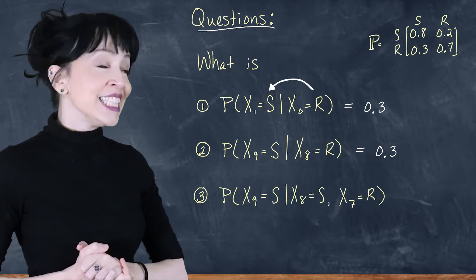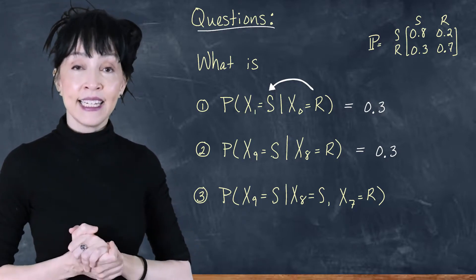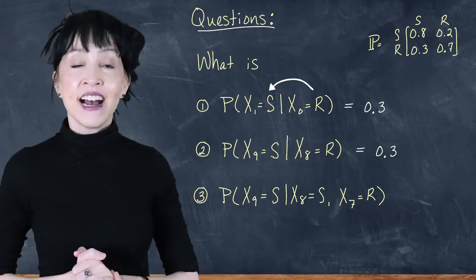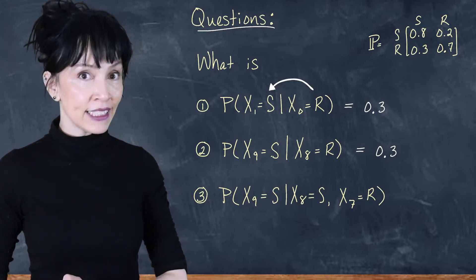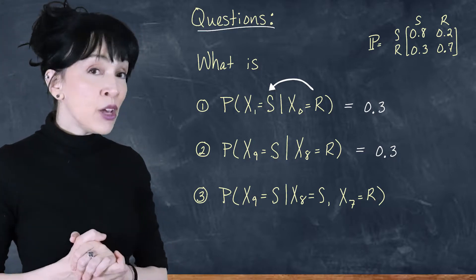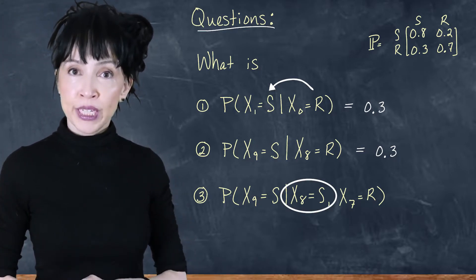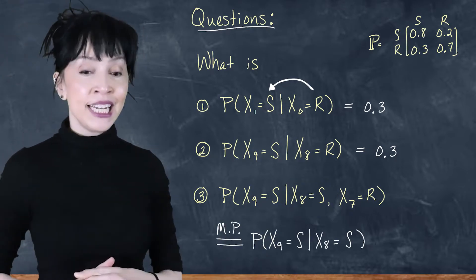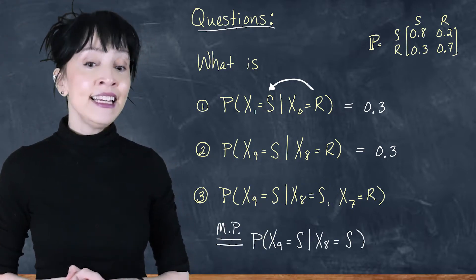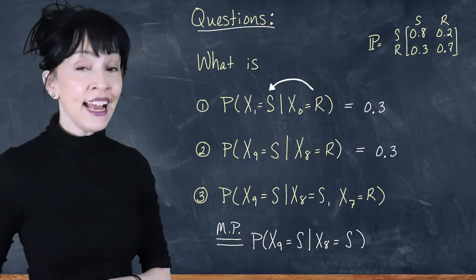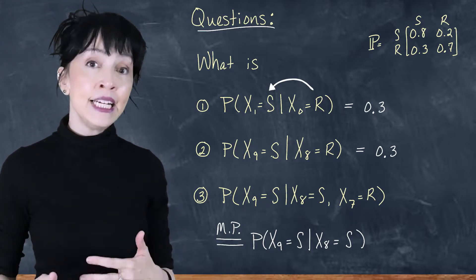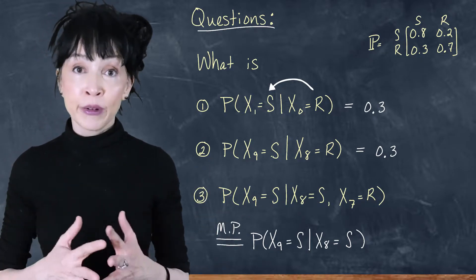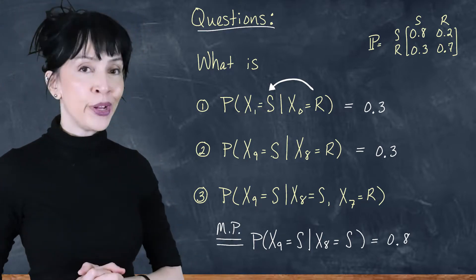Third question: what is the probability that on day nine it is sunny, given on day eight it was sunny and on day seven it was rainy? Now I've got some history, but the only thing that matters is the most recent value. By the Markov property, this equals the probability that it is sunny on day nine given it was sunny on day eight. That is the sunny-to-sunny one-step transition, and we read it off the matrix: the sunny-to-sunny entry is 0.8.